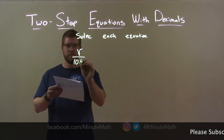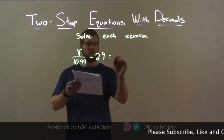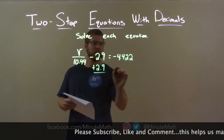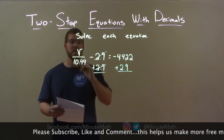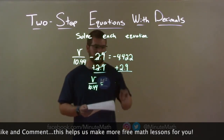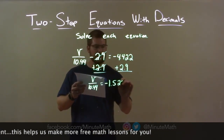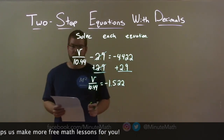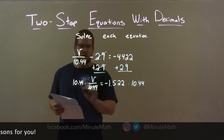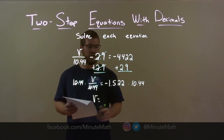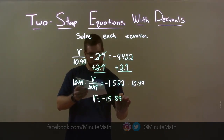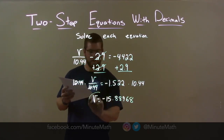b over 10.44 minus 2.9 equals negative 4.422. First step: add 2.9 to both sides. 2.9 eliminates, leaving b over 10.44 by itself on the left. On the right, negative 4.422 plus 2.9 is negative 1.522. Now I'm dividing by 10.44, so if I multiply both sides by 10.44, the 10.44 eliminates, leaving b by itself. Negative 1.522 times 10.44 is negative 15.88968. There we have our final answer.